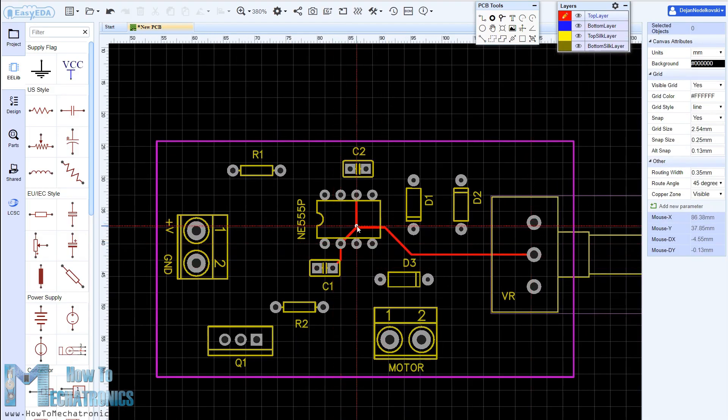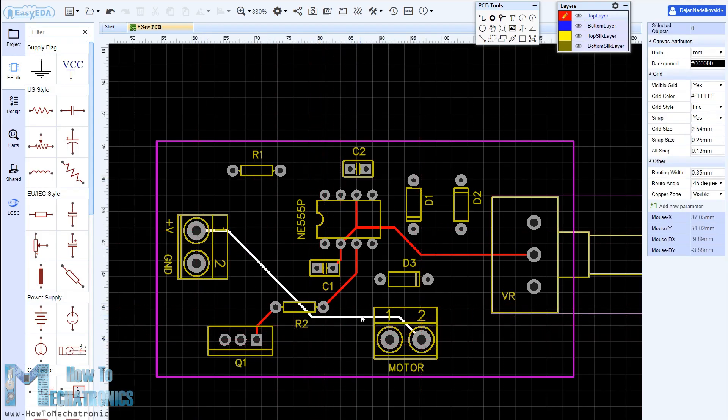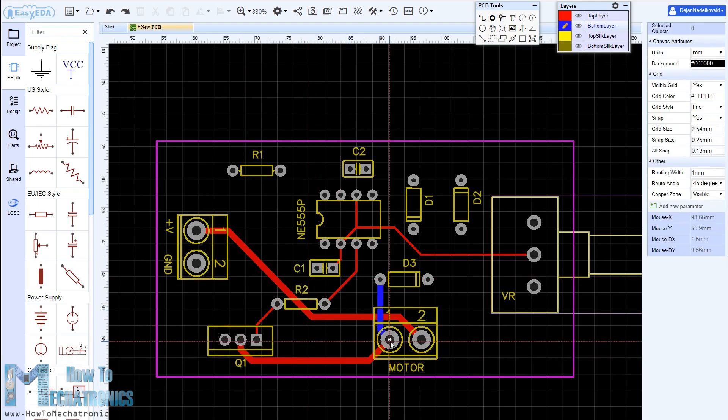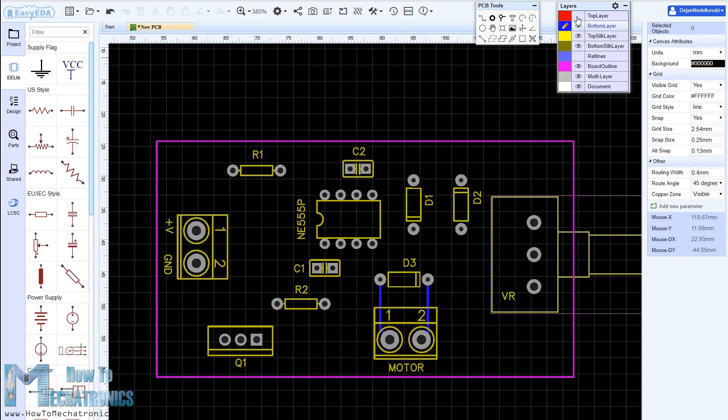Using the tracking tool we need to connect all the components. The tracking tool is quite intuitive and easy to work with. We can use both the top and the bottom layer for avoiding crossings and making the tracks shorter.